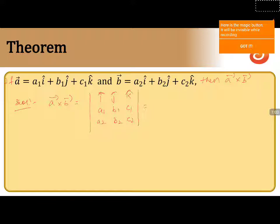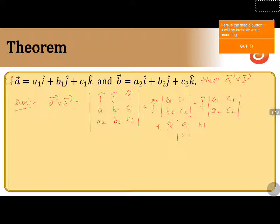While calculating the determinant, we take i-cap and by closing the row and column of i, we get b1 c1 over b2 c2. Next, minus j-cap, and by closing the row and column of j, we get a1 c1 over a2 c2. Plus k-cap, and by closing the row and column of k, we get a1 b1 over a2 b2.